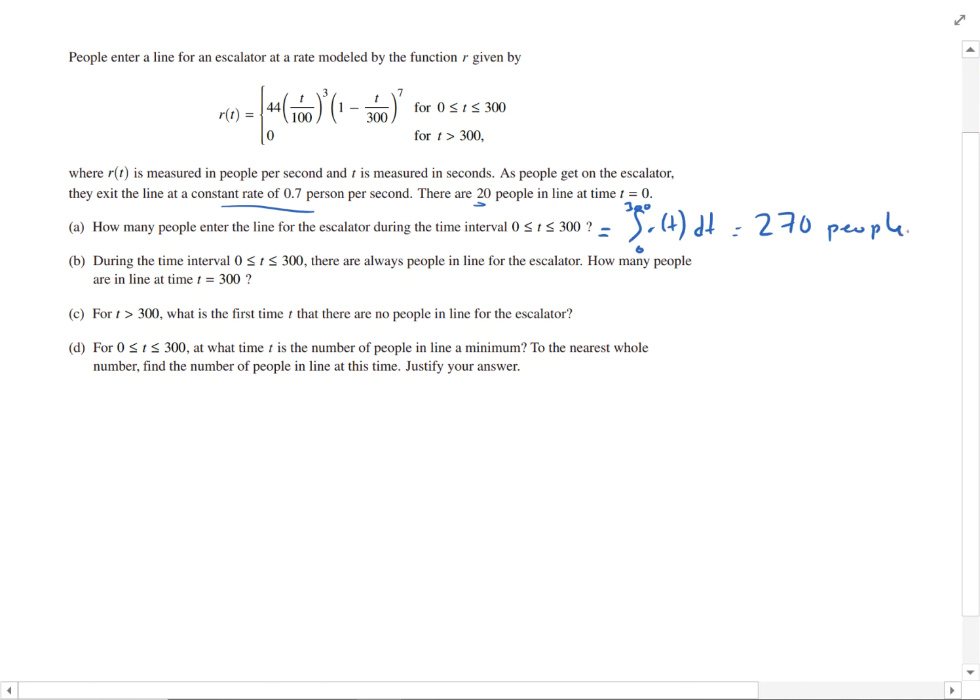During B, this time interval, there are always people in line for the escalator. How many people are in line at T equals 300?